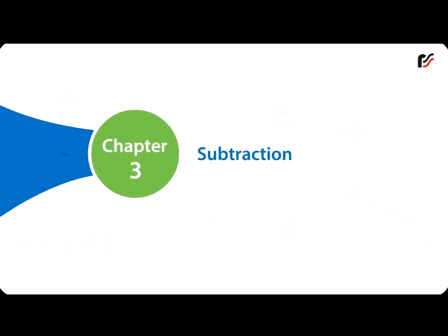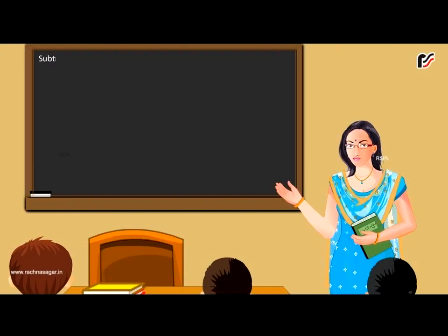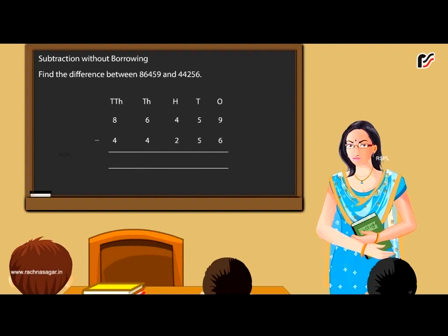Chapter 3: Subtraction. Subtracting 5 and 6 digit numbers. Subtraction without borrowing. Find the difference between 86,459 and 44,256. Arrange the given numbers in columns: ones under ones, tens under tens,